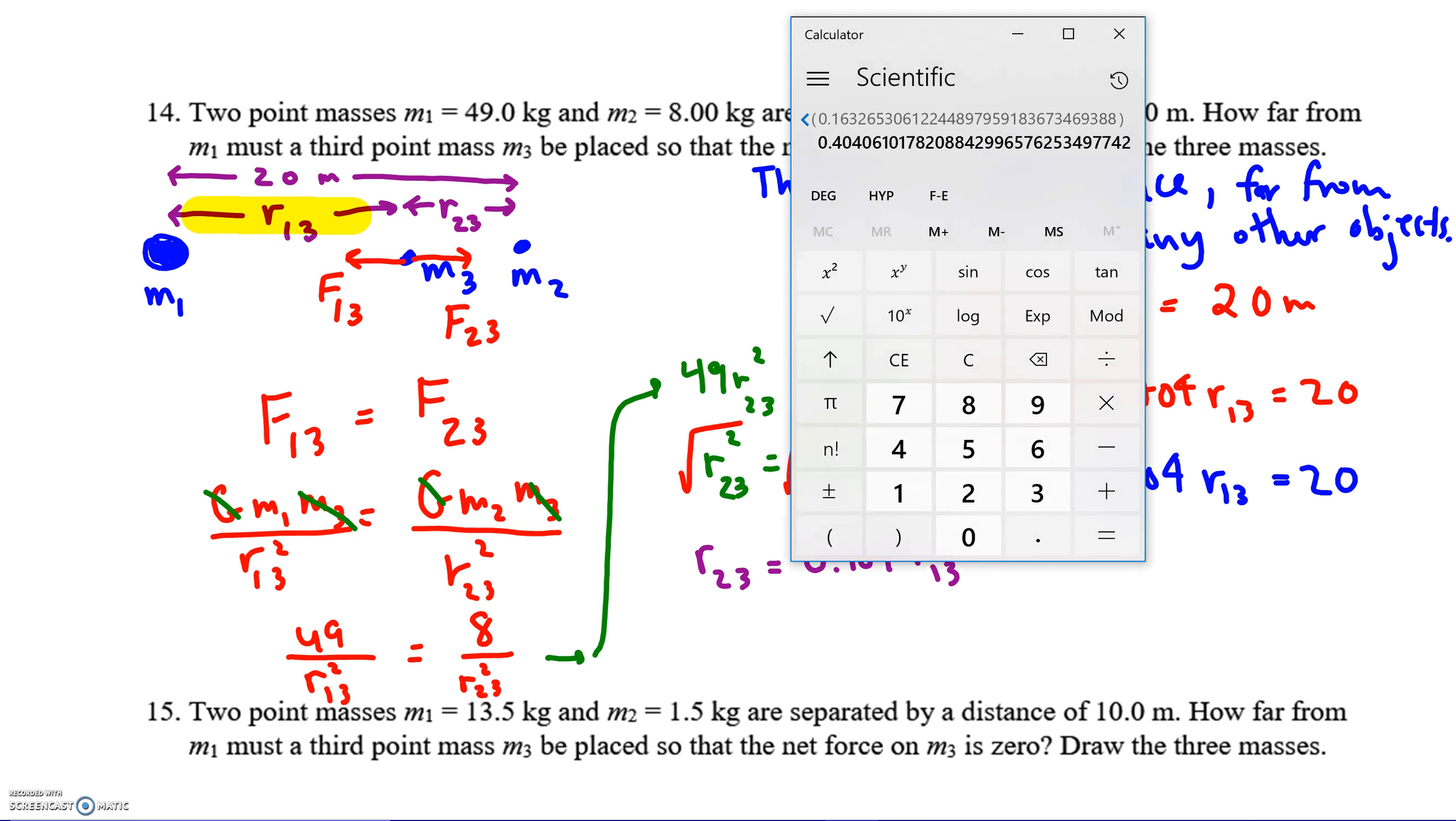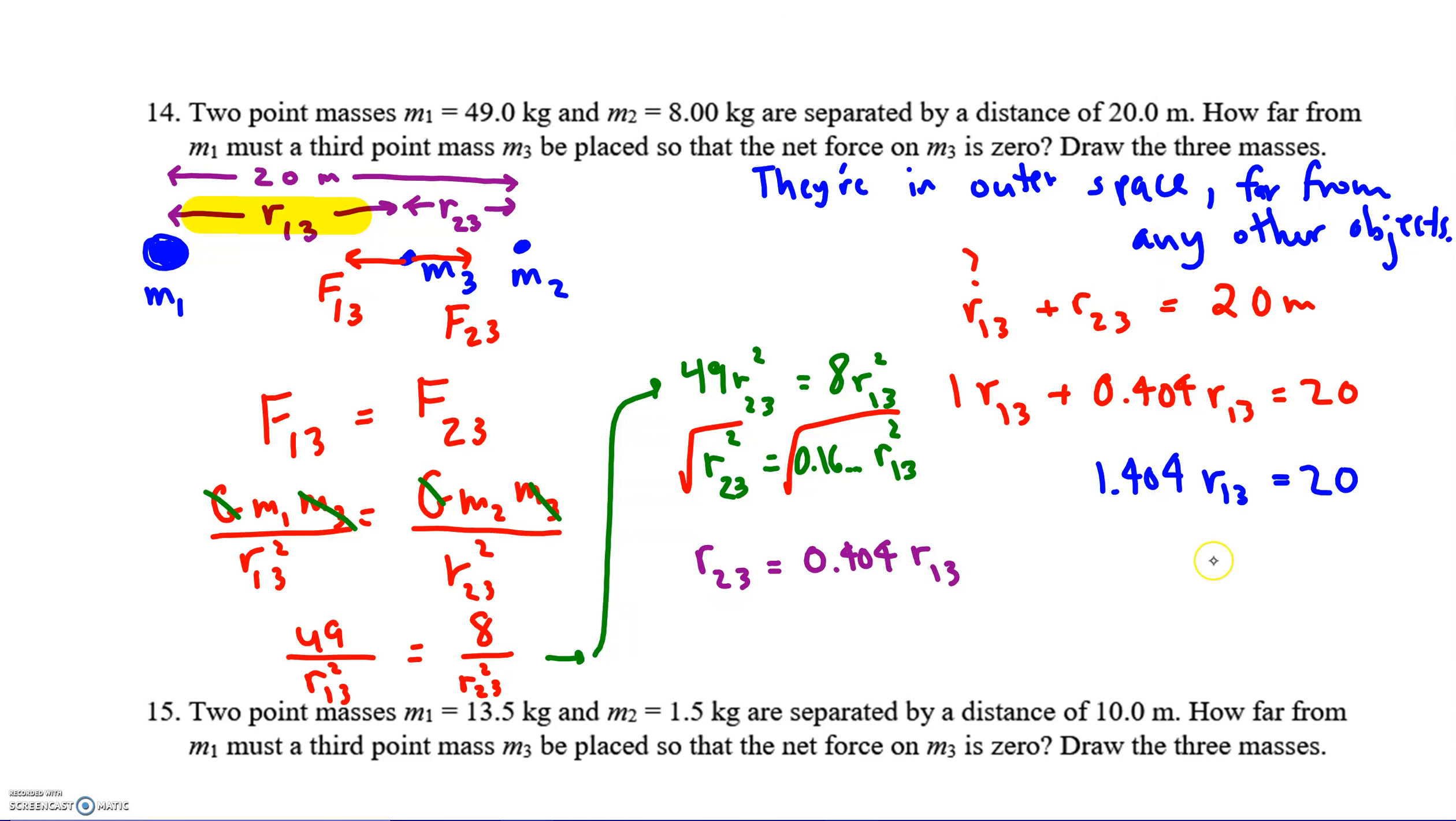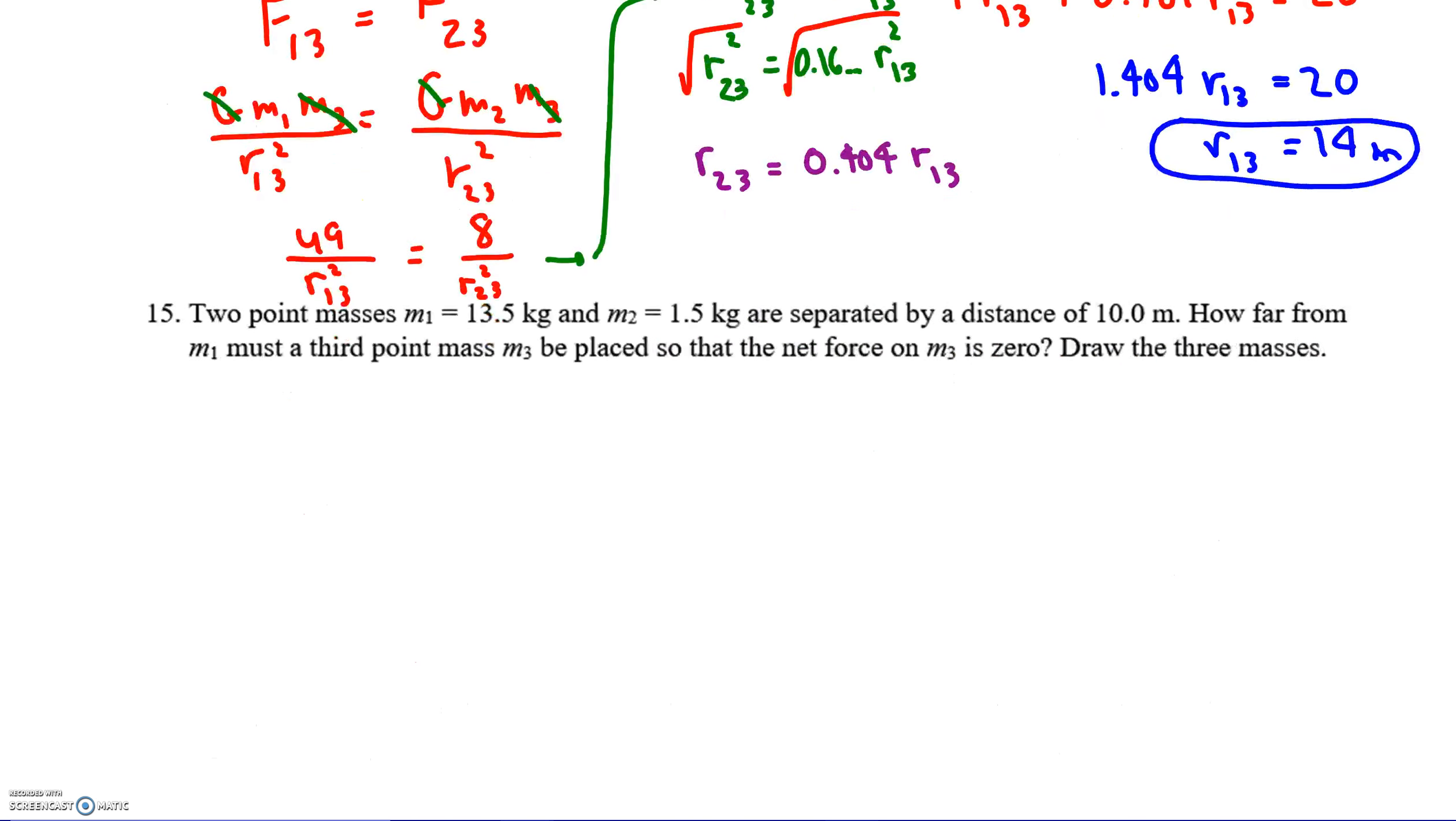If we do 20 over 1.404, the distance we get is 14 for R13. So 14 meters, that's this distance. That's how far away M3 should be placed from M1.